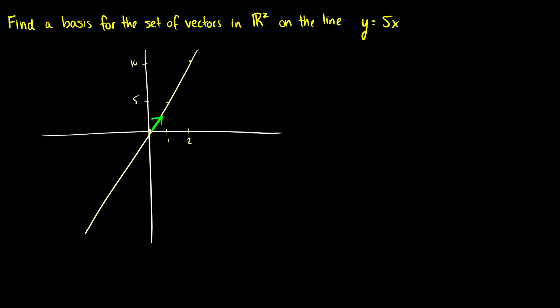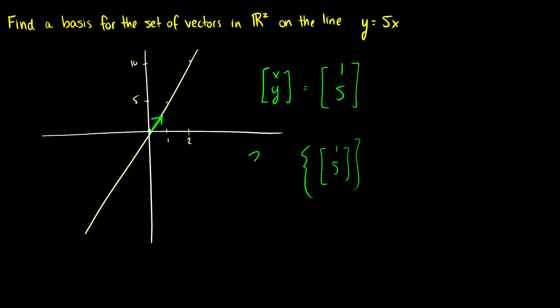Since this is a line, we can just take the vector (1, 5). Any multiple of (1, 5) lies on this line, and it's linearly independent because it's a set of one vector. So the new basis is simply the set containing (1, 5).